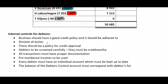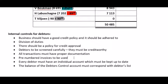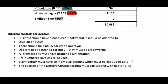All transactions must have proper documentation and pre-numbered invoices must be used, so that an employee can't remove an invoice and renumber the next one incorrectly. Every debtor must have an individual account which must be kept up to date — that's the whole debtors ledger and debtors list section. Finally, the balance of the debtors control account must correspond with the debtors list, which is the reconciliation process.